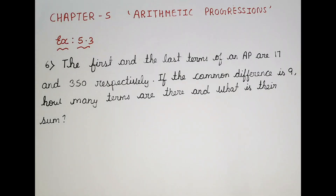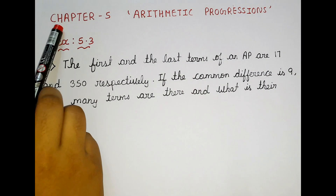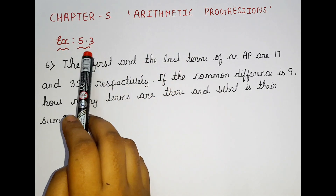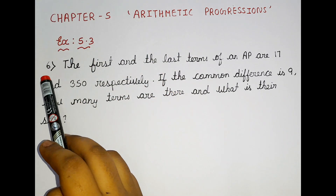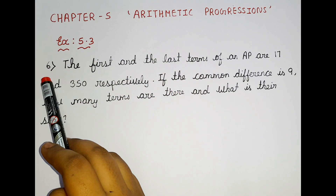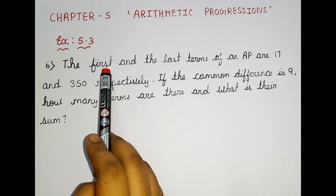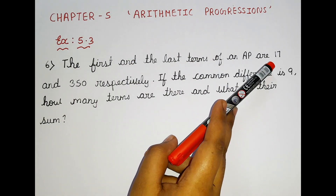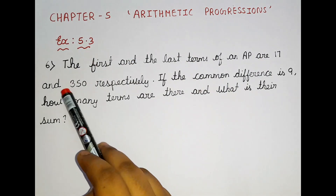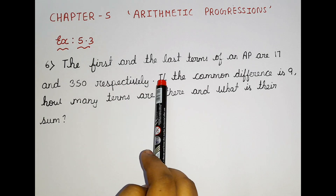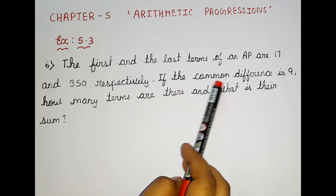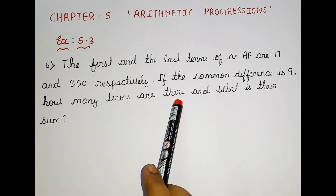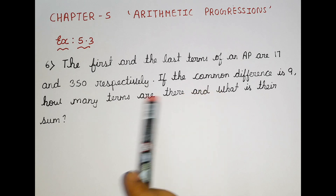Today we are going to be learning Chapter 5, Arithmetic Progressions, Exercise 5.3, 6th question. Now let's read the question: The first and the last terms of an AP are 17 and 350 respectively. If the common difference is 9, how many terms are there and what is their sum?